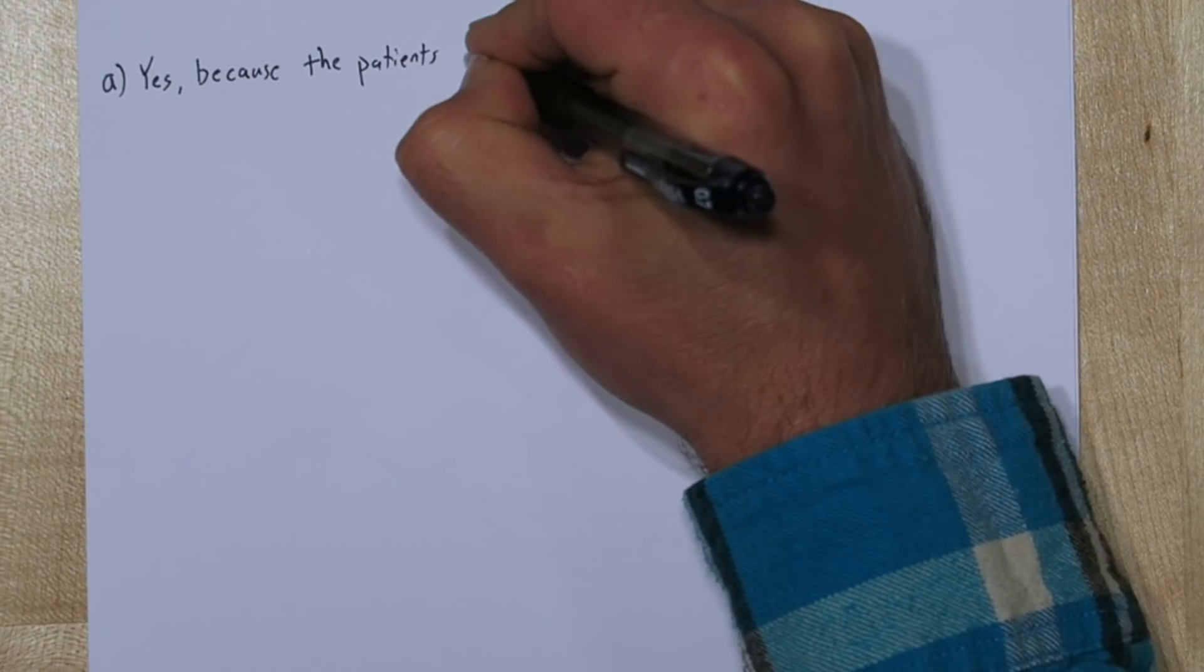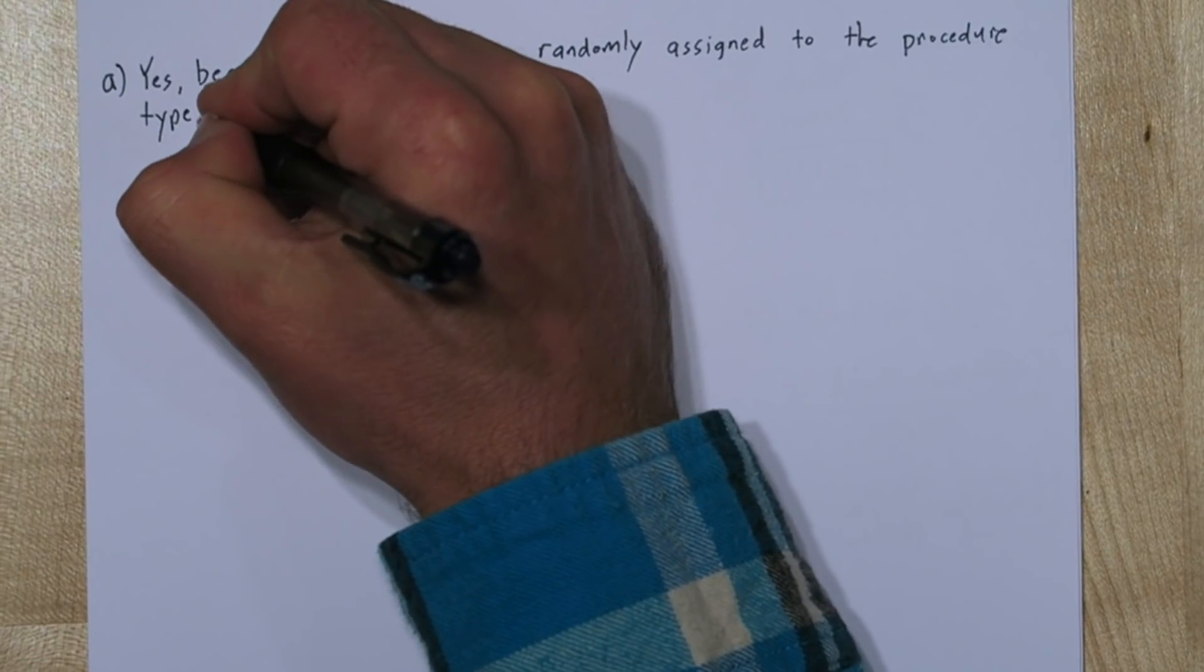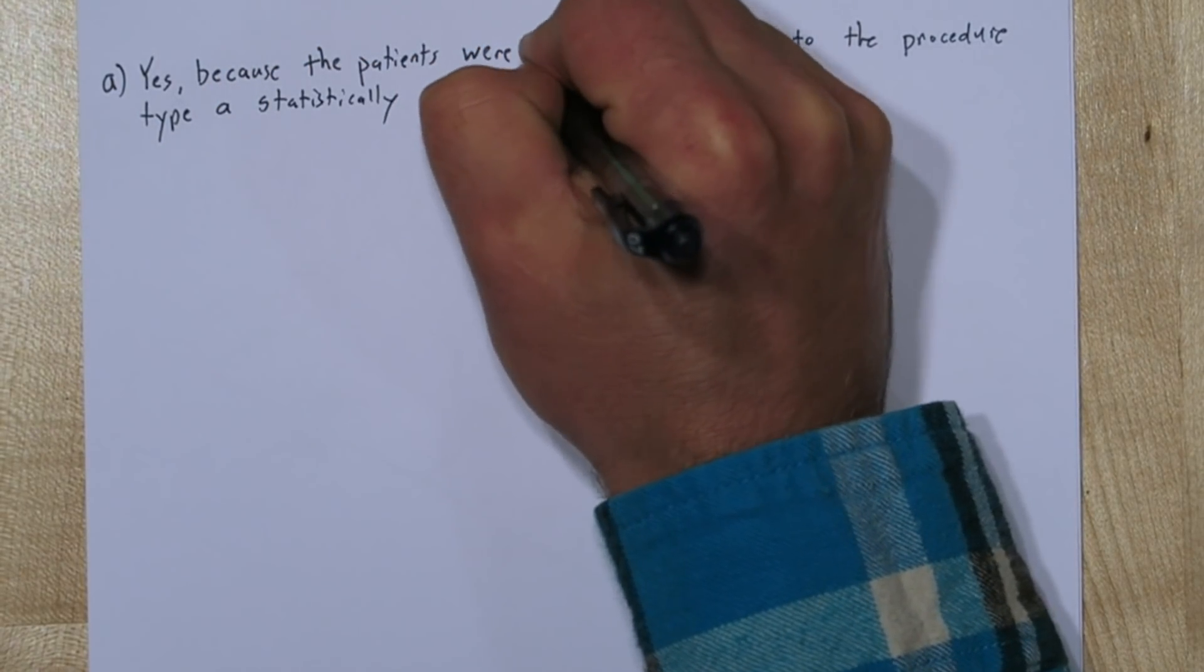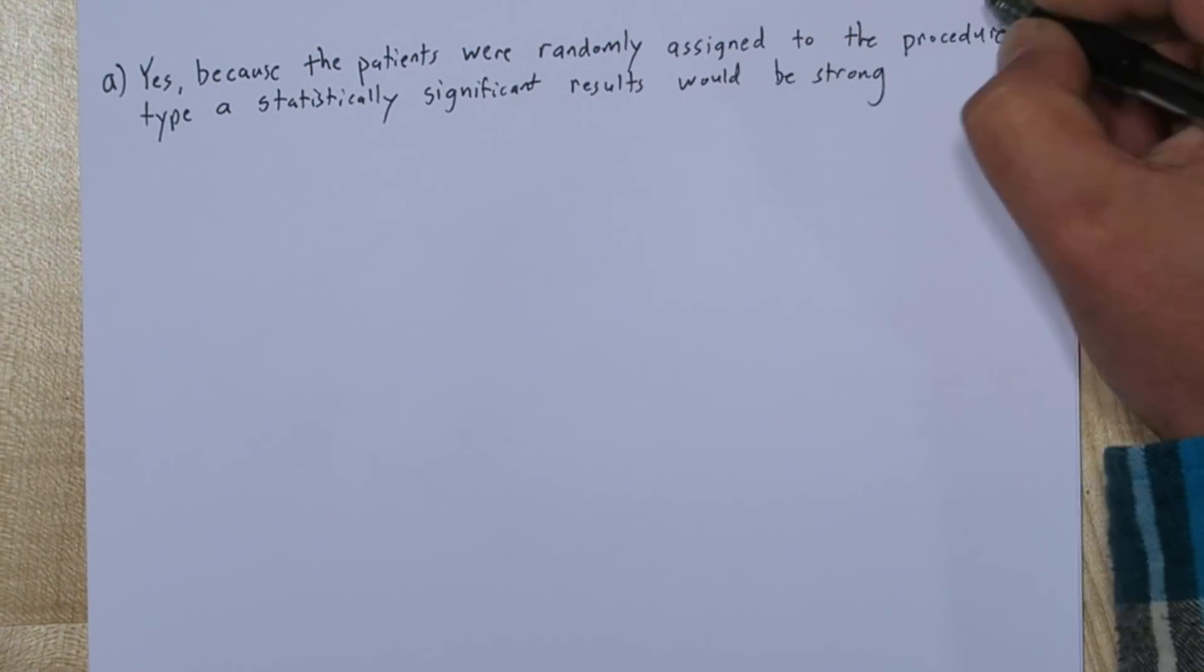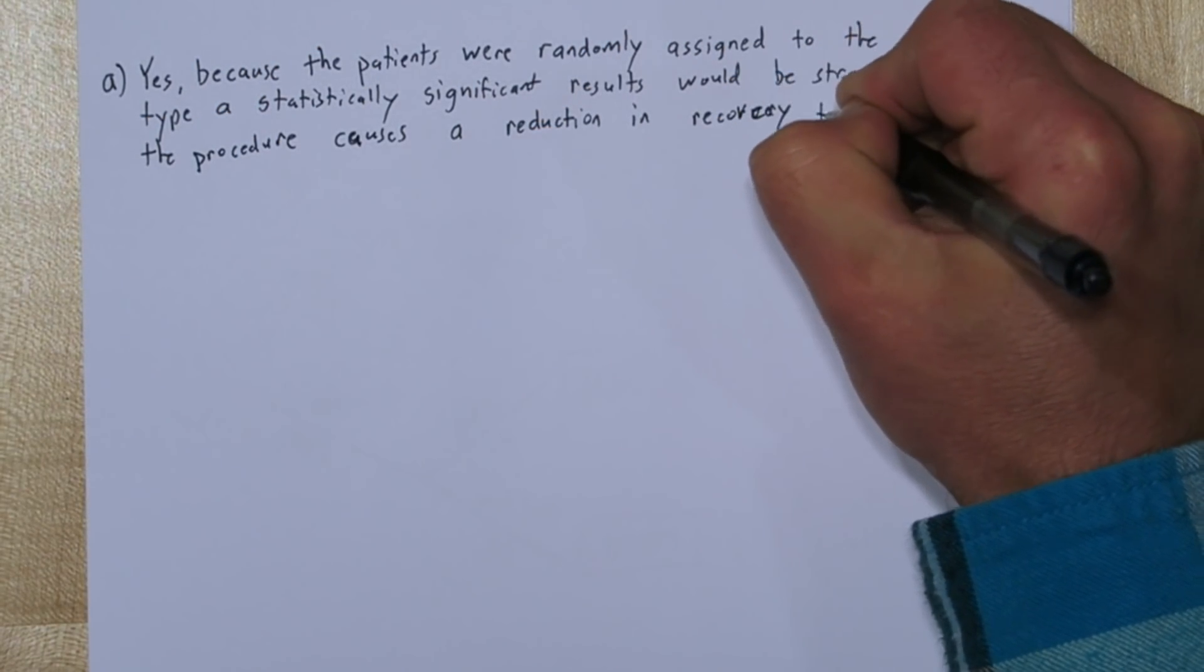Part A of question 4 is asking if we can establish causation. And we can, because the patients were randomly assigned to the procedure type, a statistically significant result would be strong evidence the procedure causes a reduction in recovery time.